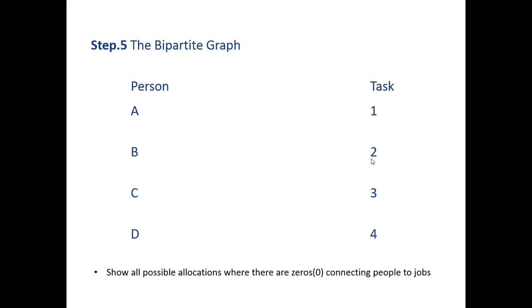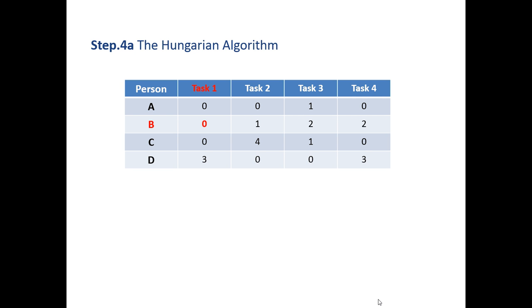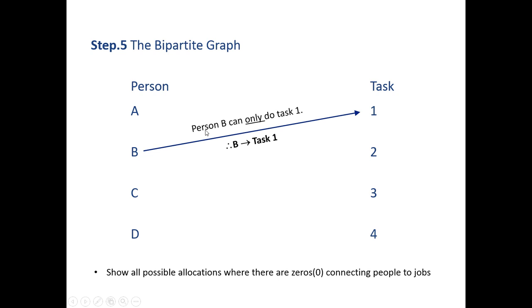Next step is to perform a bipartite graph. This shows all the people and all the tasks. Remember, we can only allocate one person to a particular task. Looking back at our original table after the Hungarian algorithm, person B can only perform task 1. The 0 represents the task they can perform. So we allocate person B to task 1 - they are the only one that can perform it.